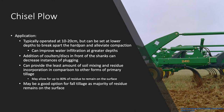Chisel plows are typically operated between 10 to 20 centimeters and assist with soil fracturing, but can also be set at lower depths to break apart the hardpan and alleviate compaction, which can improve water infiltration at greater soil depths. Chisel plows may also have a set of coulters or discs in front of the shanks to reduce residue size and decrease instances of plugging. The main benefit of using a chisel plow is that it can provide the least amount of soil mixing and residue incorporation in comparison to other forms of primary tillage, and in certain configurations may allow for up to 80% of residue to remain on the surface. Due to the potential for conserving surface residue, the chisel plow may be a good option for fall tillage as the presence of large amounts of surface residue may reduce the risk of erosion in the spring.